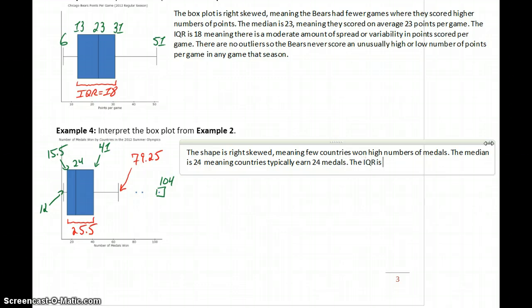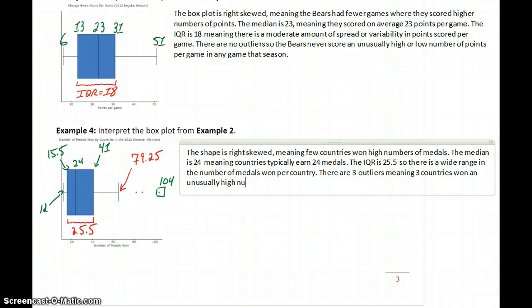The IQR is 25.5 medals, so there's a wide range in the number of medals won per country. And in this case, there are three outliers, meaning three countries won an unusually high number of medals.